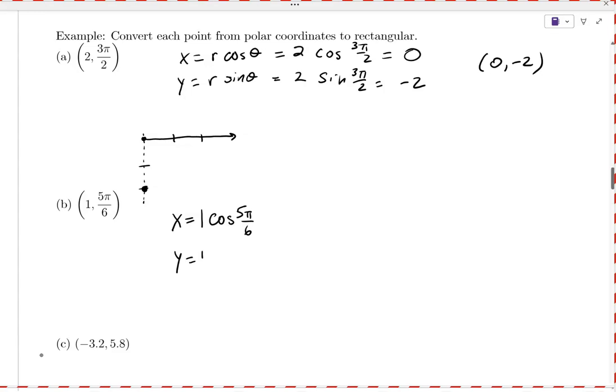For the next one, again, we're going to use the same conversion formula. We're given r as 1, and θ is 5π over 6. So we're literally just plugging in the values of the conversion formulas that we have. Cosine of 5π over 6 is -√3/2. Good. And sine of 5π over 6 is 1/2. Good. So our coordinates would be -√3/2, 1/2.